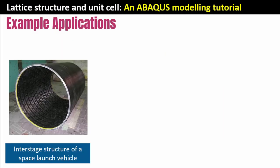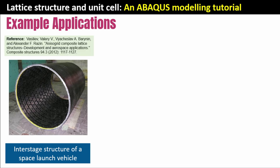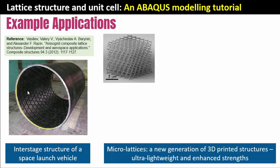What are the applications where these things are used? The interstage structure of a space launch vehicle is made from a lattice structure. One of the really interesting uses is micro-lattices — about five microns in size, about 50 microns in length, width, and height. They are a new generation of 3D-printed structures with ultra-lightweight and enhanced strength. Boeing is actually working on these for use in their aerospace fuselage to reduce fuel consumption and help the environment.